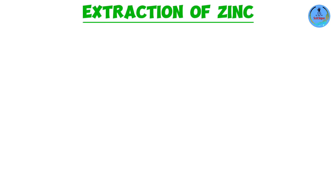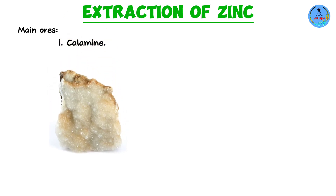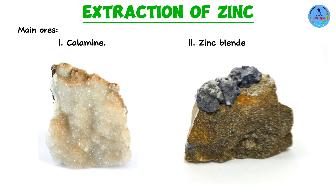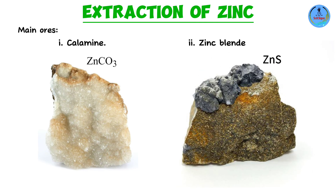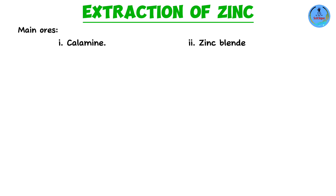Let's discuss extraction of zinc. First, the main ores of zinc: we have calamine, which is zinc carbonate (ZnCO₃), and zinc blende, which is zinc sulfide (ZnS). In most cases, ores containing zinc sulfide also contain lead sulfide, commonly referred to as galena. Galena is the main ore for extraction of lead, but here it acts as an impurity — a contaminant we don't want.